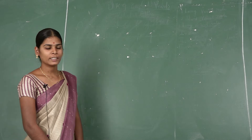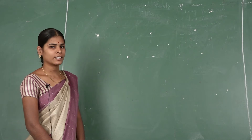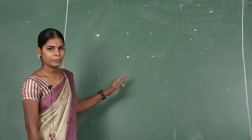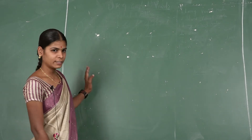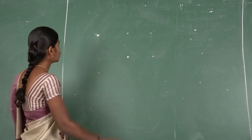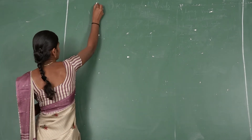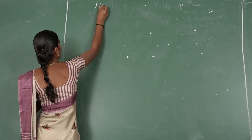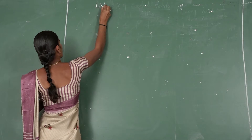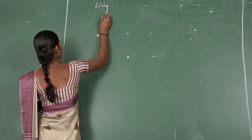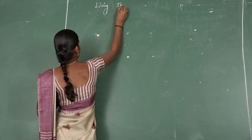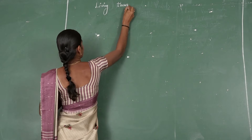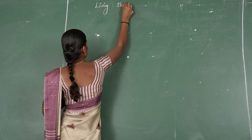Hi students, welcome to this session of Standard Science. Today our topic is Living Things and Non-Living Things. How do we spell this? Living: L-I-V-I-N-G. Living Things.